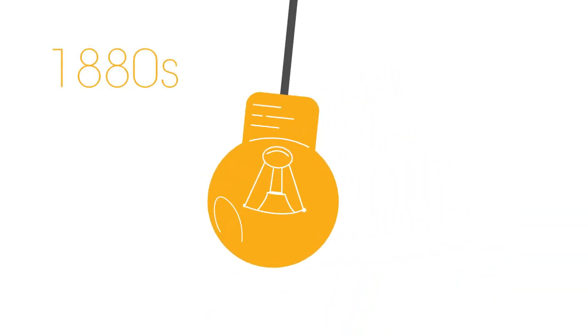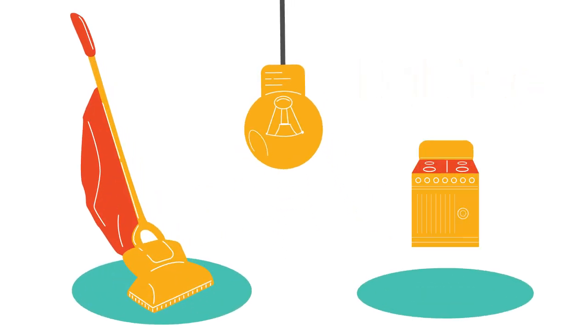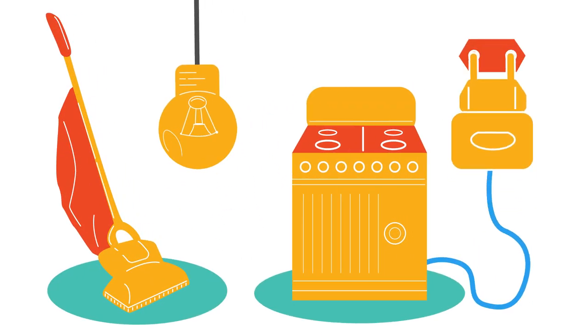When electricity first became available to homes in the 1880s, it was mainly used for lighting. Over the next few decades, other appliances became available and so the plug socket arrangement was needed.